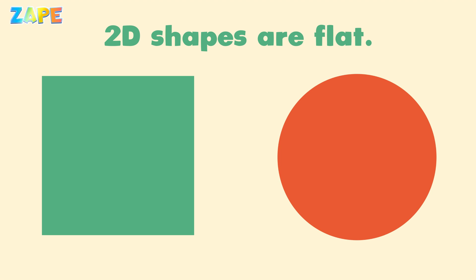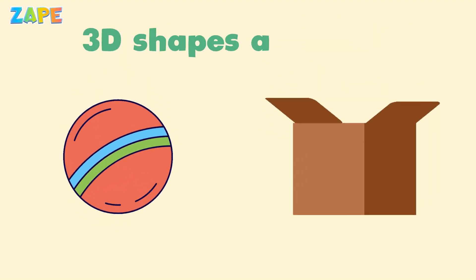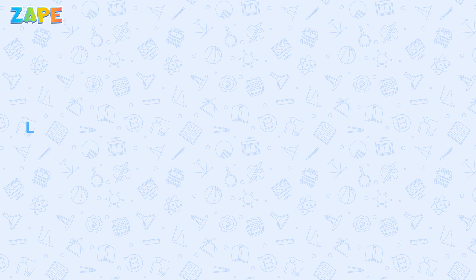2D shapes are flat, like a square or a circle. 3D shapes are solid, like a ball or a box. Look around your home and find as many shapes as you can.